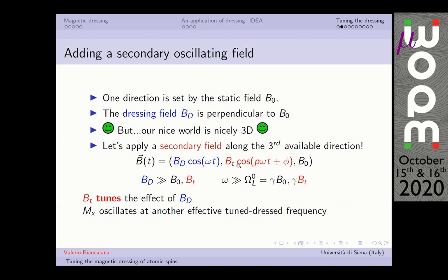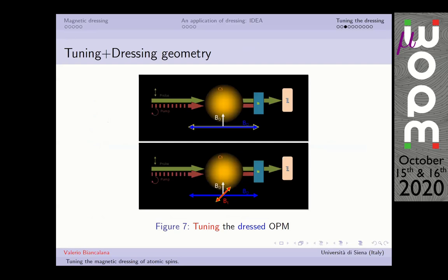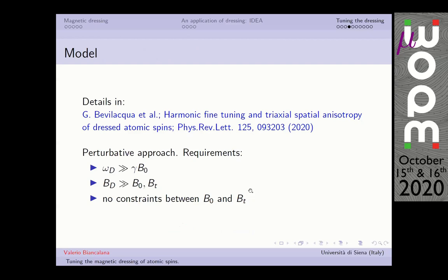The effect of this extra additional field is that Mx will keep oscillating harmonically but at another effective frequency which is not simply given by B₀ and BD but also includes a response to the tuning field. To summarize the geometry, we started from our magnetometer with the dressing field added, and now we add this extra tuning field which is perpendicular to both the dressing field and static field. The system remains the same for other aspects.